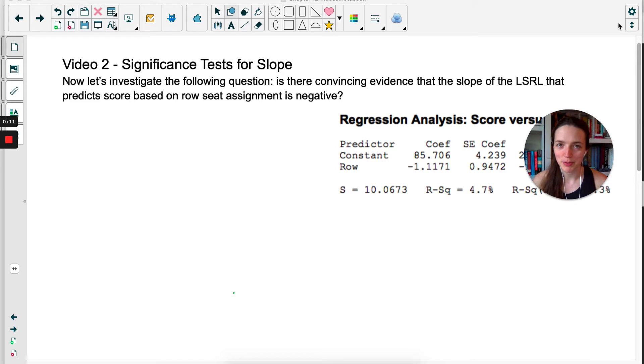Today we're looking at the same example from the last two videos, but today we're going to do a significance test instead of a confidence interval. Is there convincing evidence that the slope of the least squares regression line that predicts the score based on row seat assignment is negative? That's the question.